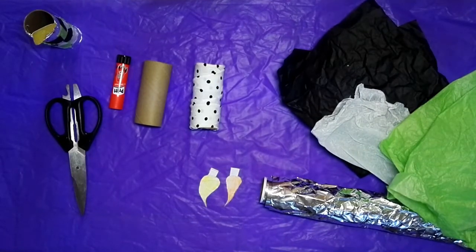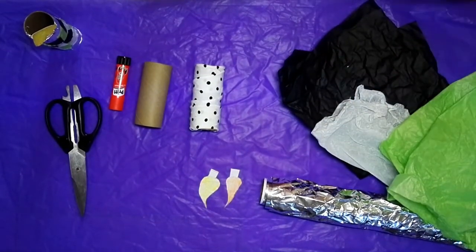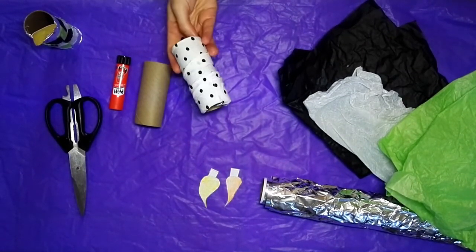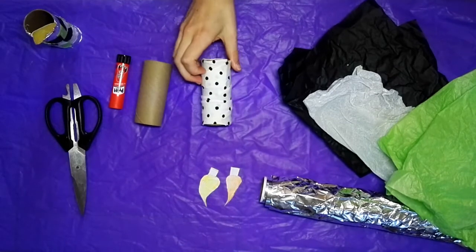So you can see I've used some tin foil here and some tissue paper just because that's what I had around. This tube here is one that I've wrapped some t-shirt yarn around just because I had some extra.